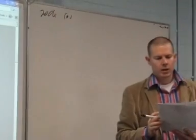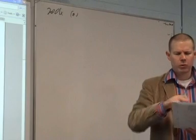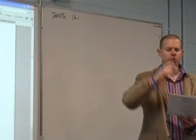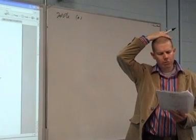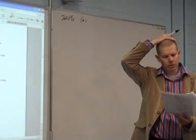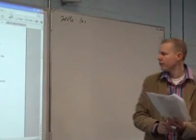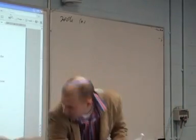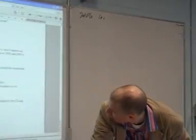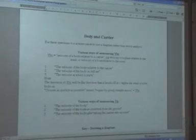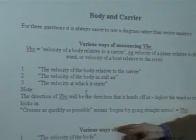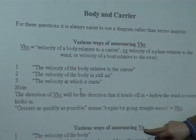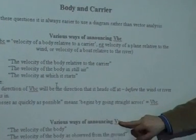A bird flies at a uniform speed of 22 meters per second. It wishes to fly to its nest. Straight away the first question here is, is that before the wind is taken into account or after the wind is taken into account? One of the things I gave here is the various ways of announcing VP and VPW, VBC body and carrier, various ways of announcing VB - that should be VP for the person or VB for a body.